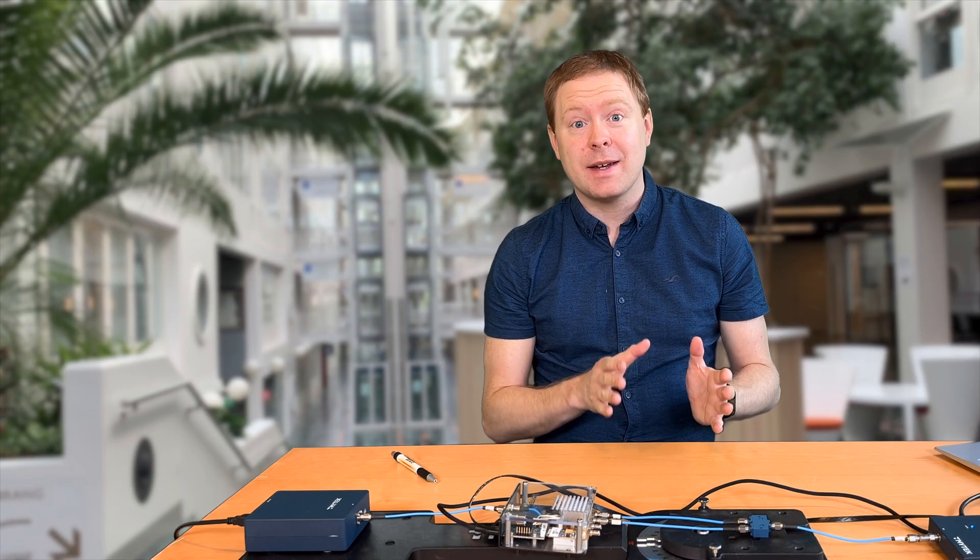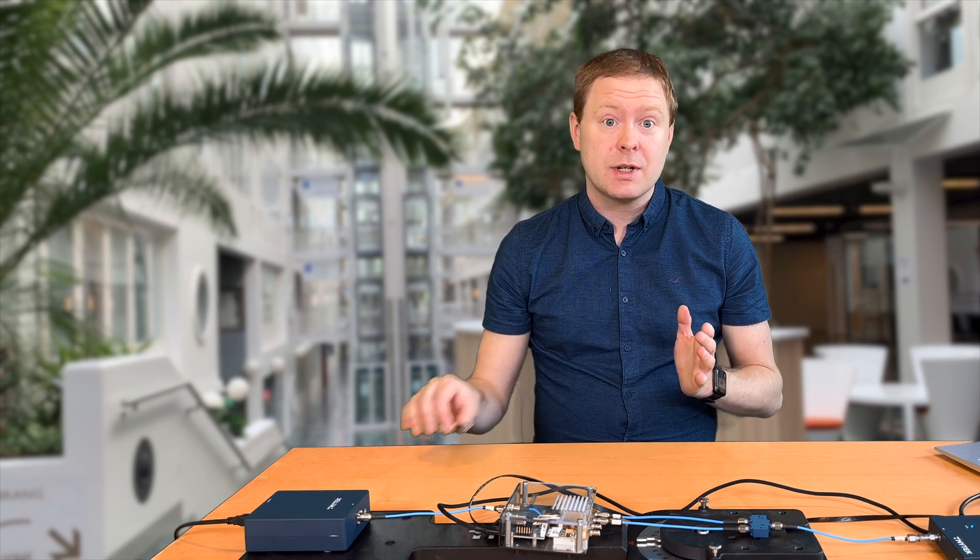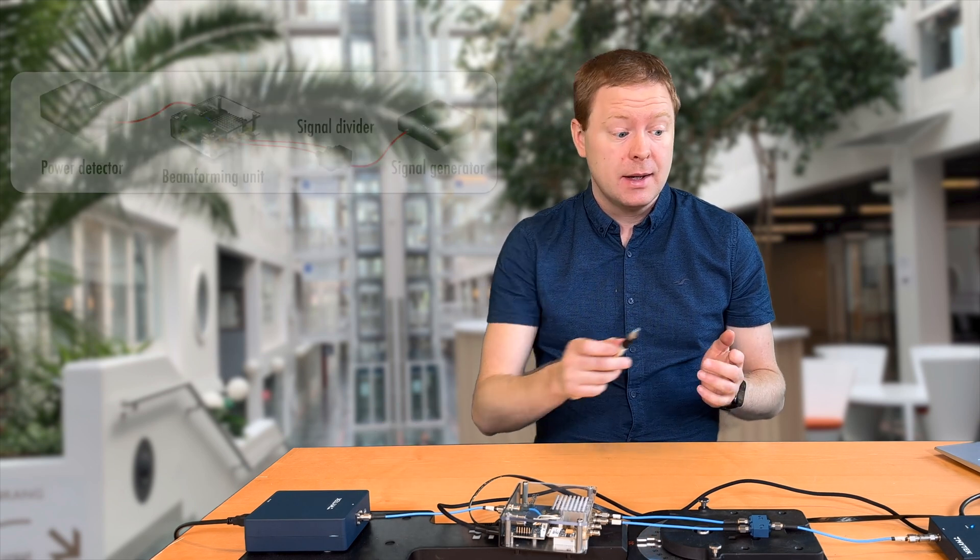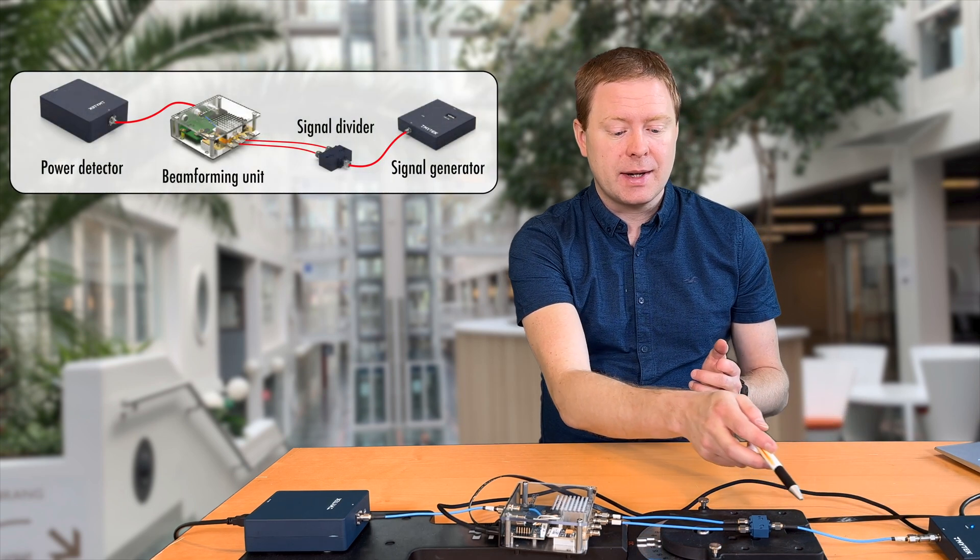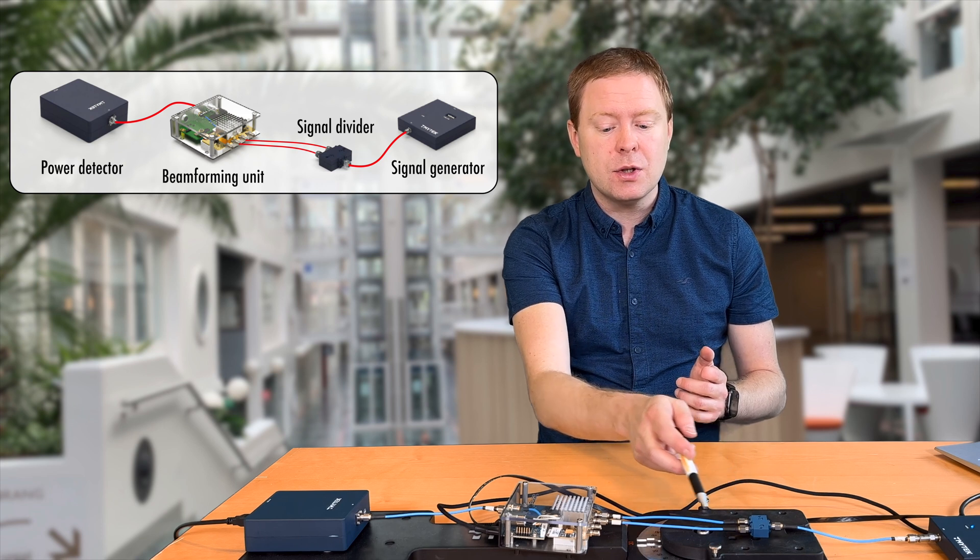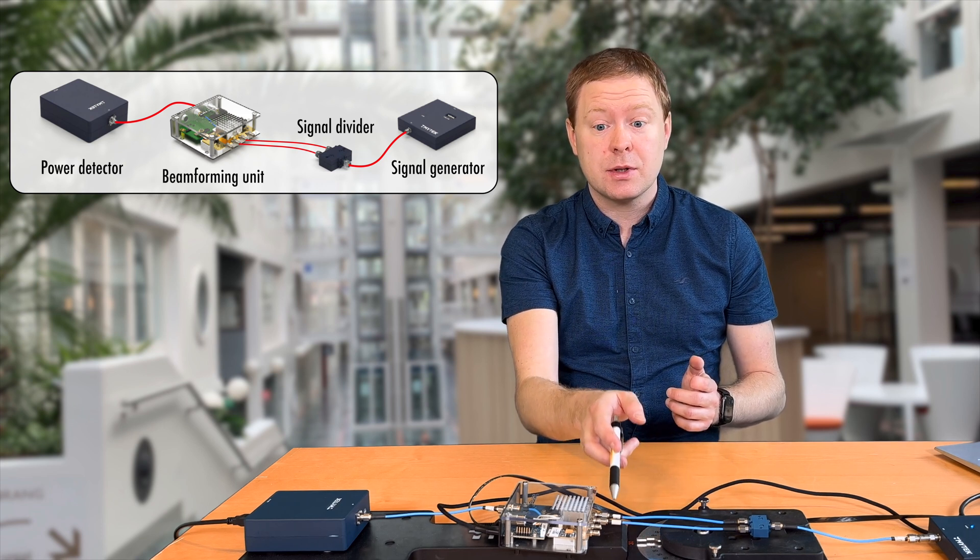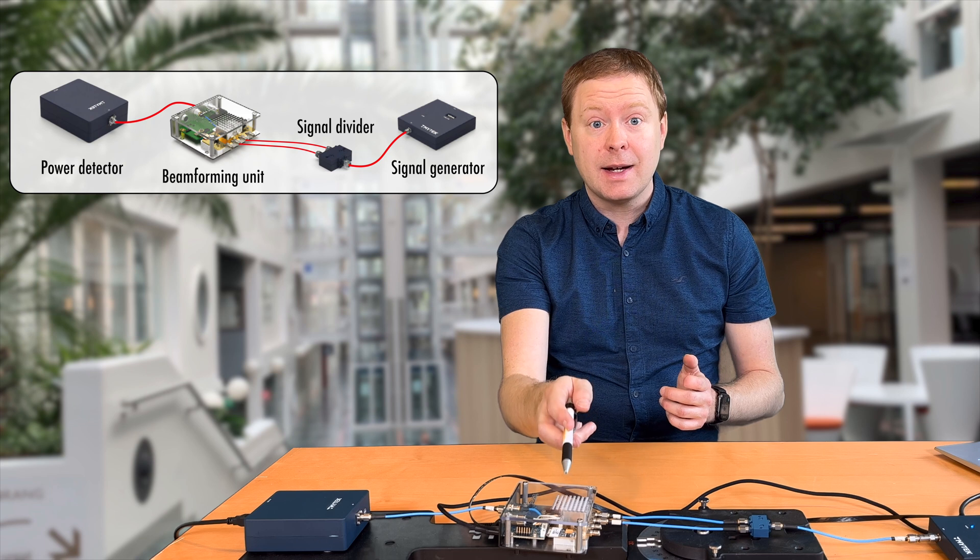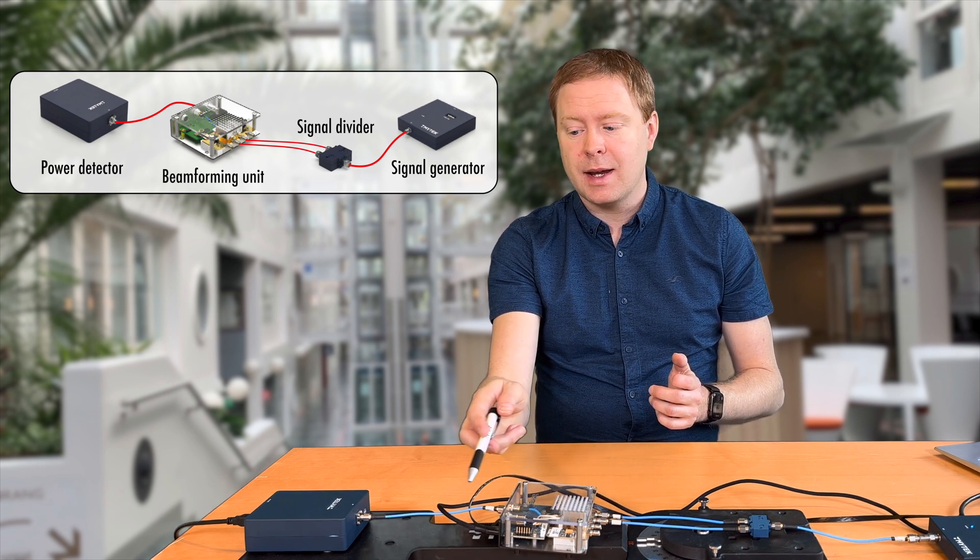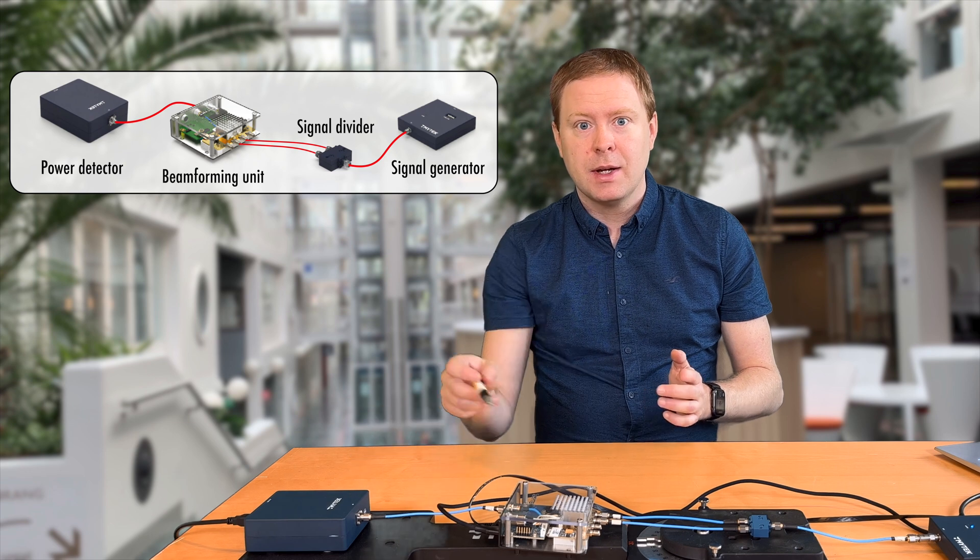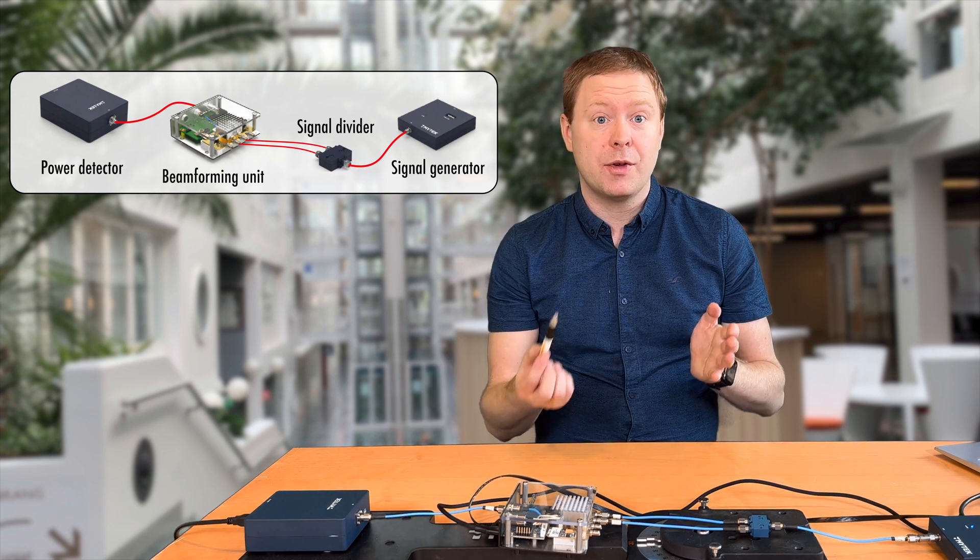We will now have a look at the constructive and destructive interference behaviors when we are considering reception mode instead. So we have once again our signal generated here. The signal goes through a cable, is divided up into two cables that are inputted to this beamforming unit. It can phase shift the signals before they are added up and then sent to the signal detector here. So it's the opposite of the previous scenario.